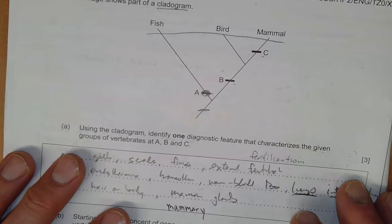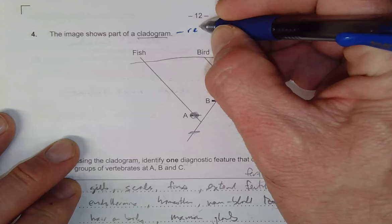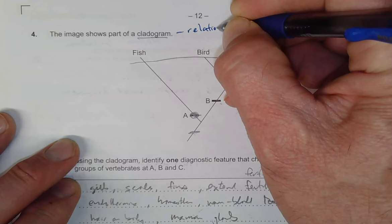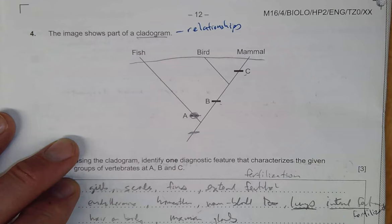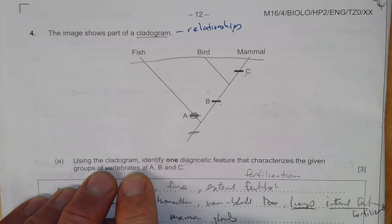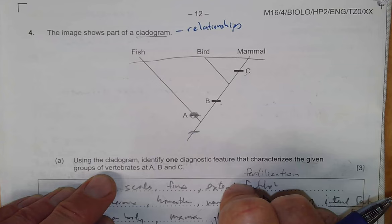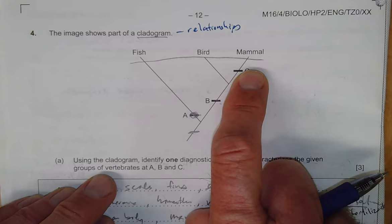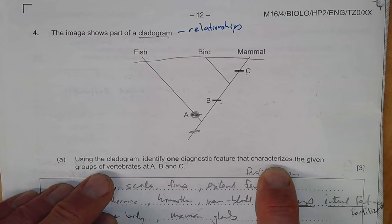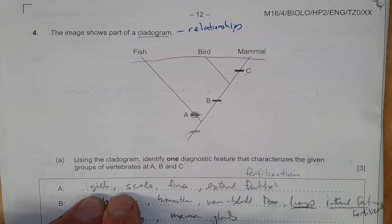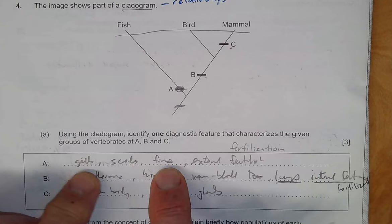Another question relating to evolution: here we have a cladogram showing the relationships, the evolutionary relationships between different organisms—fish, bird, and mammals. What will help you out is think about the characteristics of birds, fishes, and mammals. Fishes have gills, scales. Birds have feathers. Mammals—we have hair on our bodies which the other two don't. So one diagnostic feature that characterizes these groups: once you branch off and go towards A, all these organisms are going to have gills, scales, fins, and external fertilization.